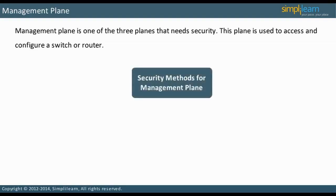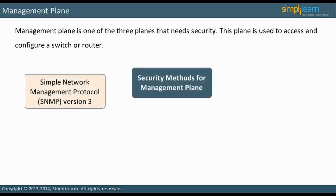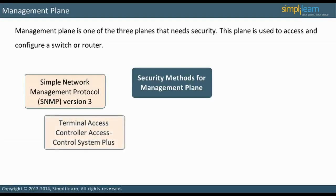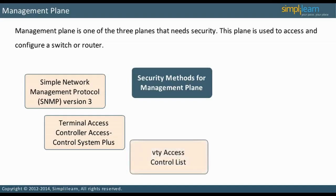The management plane is secured through various methods. One of the methods is Simple Network Management Protocol, SNMP version 3. This can be compared to SNMP versions 1 and 2C, which have no authentication or encryption. Another security method is implementing Terminal Access Controller Access Control System Plus, TACACS+, for authentication and authorization. In addition, a VTY access control list can be used to secure the VTY lines.